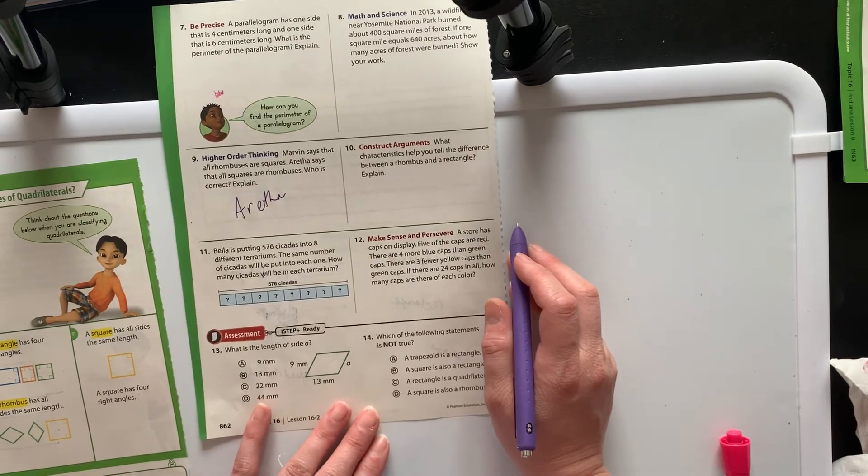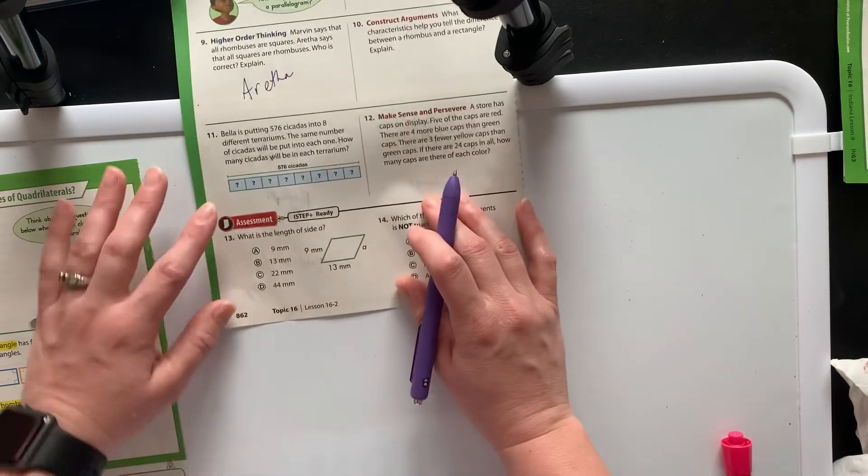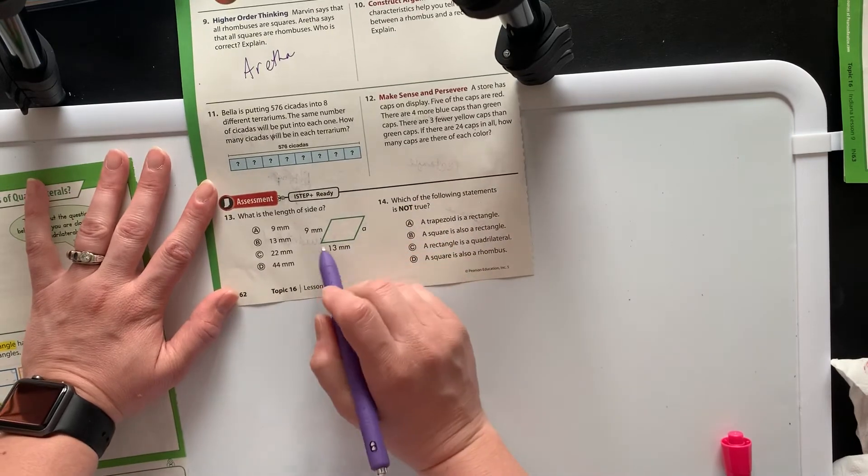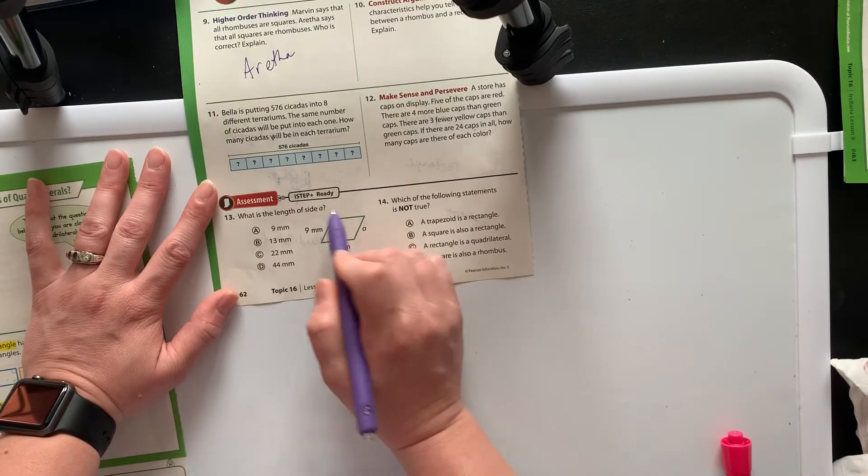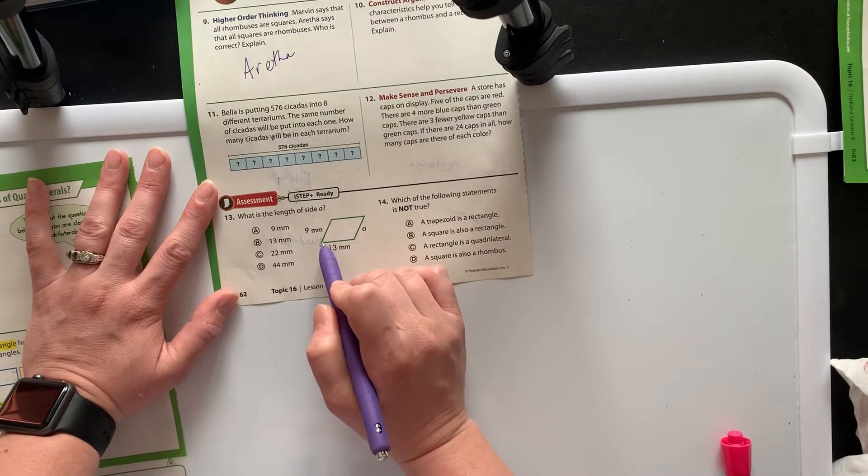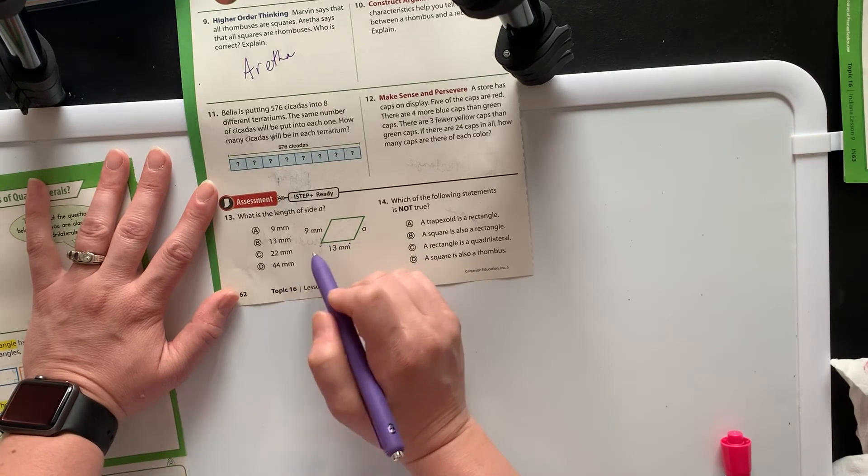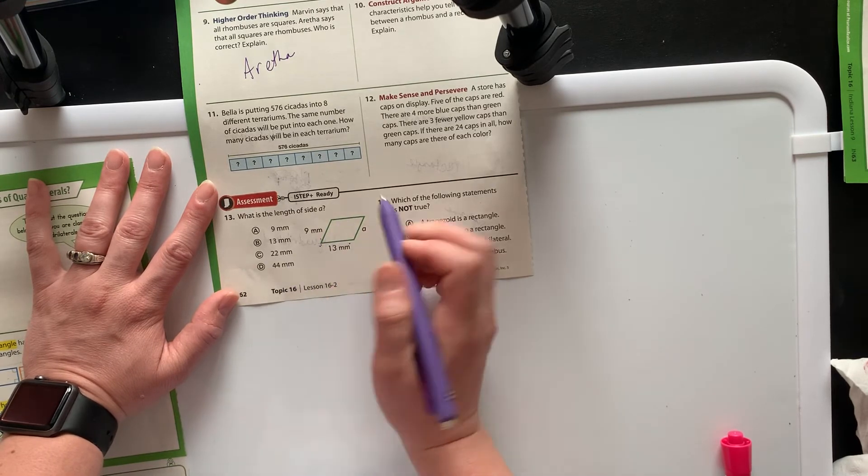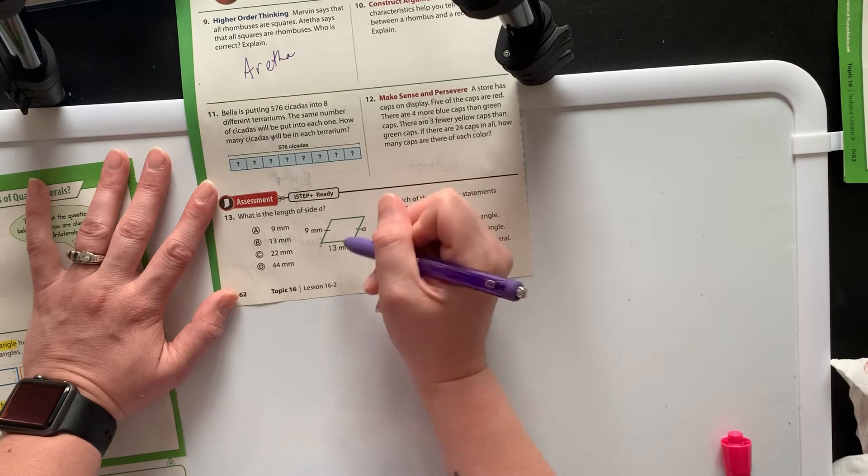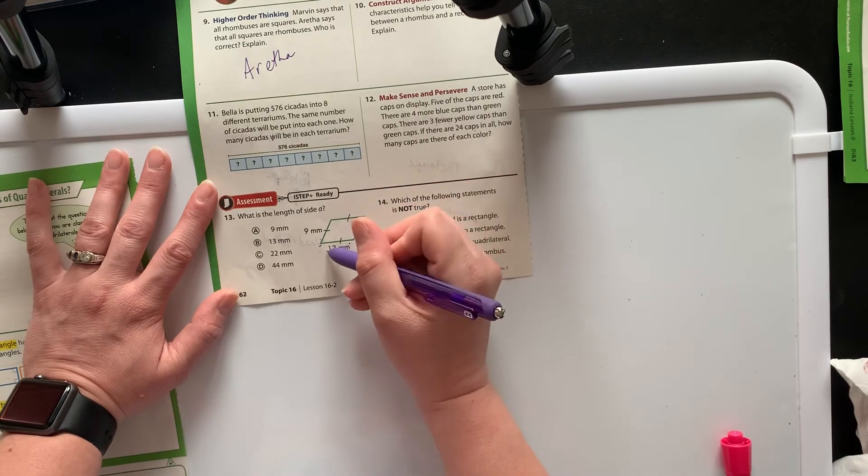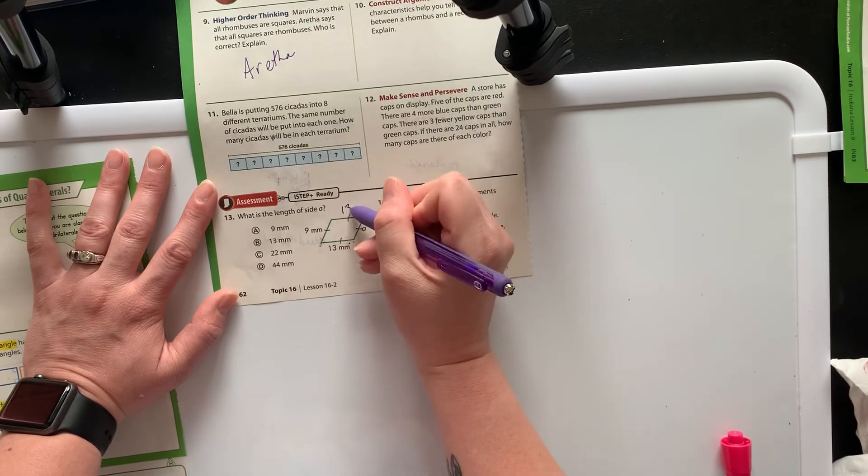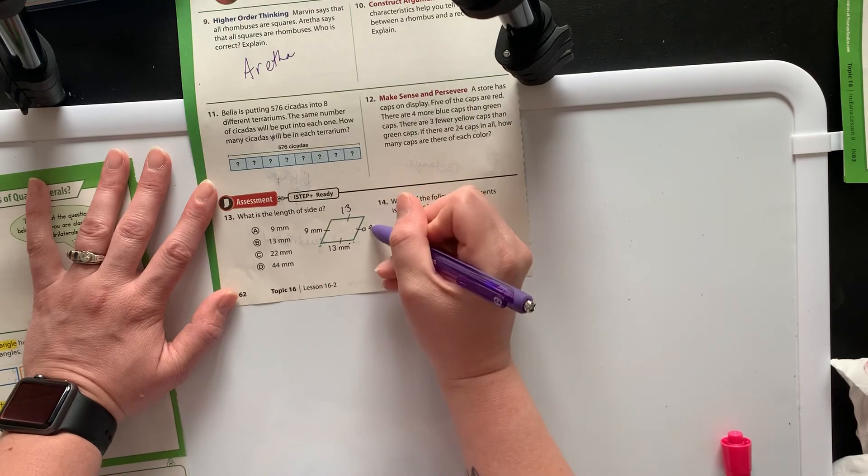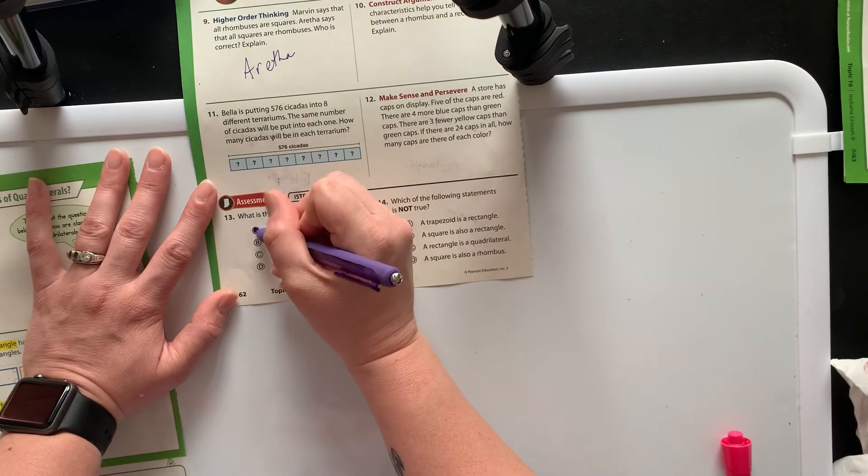Let's look at this last one. If we know that it wants to know the length of side a—so it says from here to here is 9, from here to here is 13—what would be the length of a? Well, we know that if this line is parallel to this line and this line is parallel to this line, if this is 13, then this is 13, and if this is 9, then this is 9. So the answer would be 9.